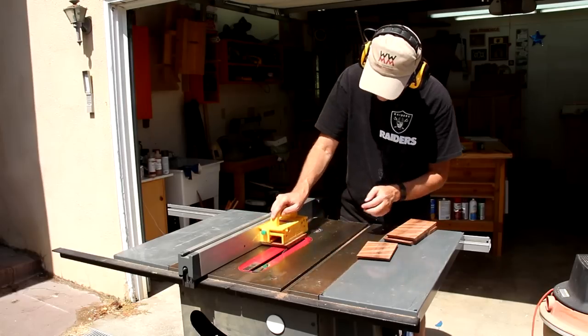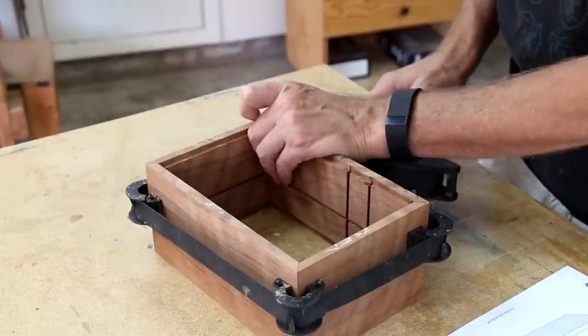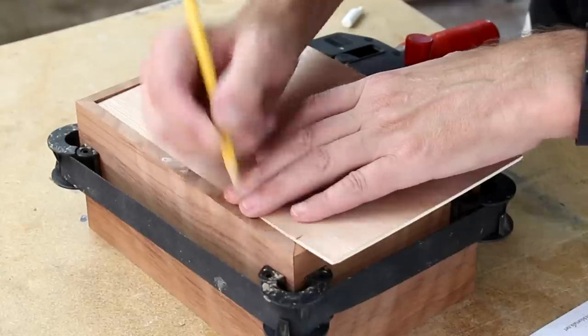Using my rip fence, I'll make a few passes to create the rabbits on the edges. I'm clamping this together temporarily so I can get a good fit on the back panel and the plexi.